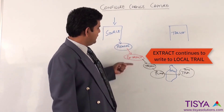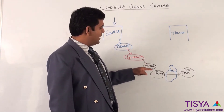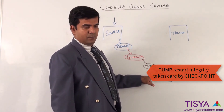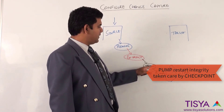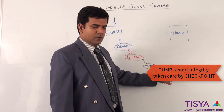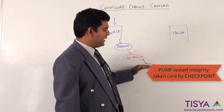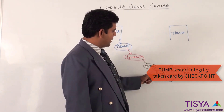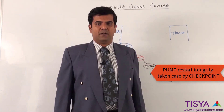The extract will continue to read from the redo log and write to the trail. The pump uses a checkpointing mechanism through which, whenever the pump starts, it reads from the trail from wherever it stopped earlier and continues. In case it stops again, it will know up to where it has read from the trail, and when it starts again it will use the checkpoint information to go to the same location and pump it across.